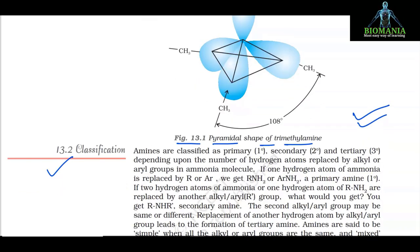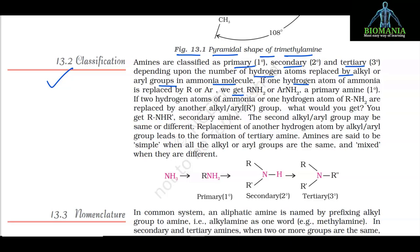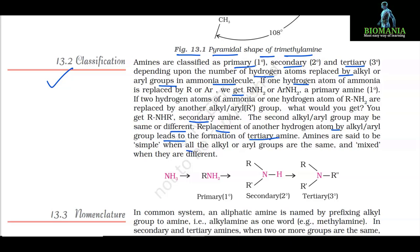13.2 Classification. Amines are classified as primary, secondary and tertiary depending upon the number of hydrogen atoms replaced by alkyl or aryl groups in ammonia molecule. If one hydrogen atom of ammonia is replaced by R, we get RNH2 or ArNH2 — a primary amine. If two hydrogen atoms are replaced, we get RNHR' — a secondary amine, where the two alkyl or aryl groups may be the same or different. Replacement of another hydrogen atom leads to tertiary amines R3N. Amines are called simple when all groups are the same and mixed when they are different.